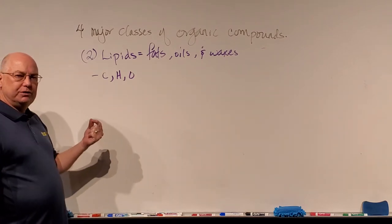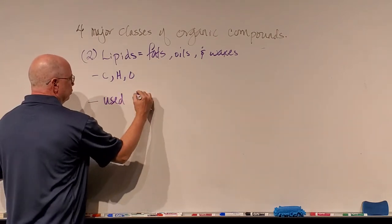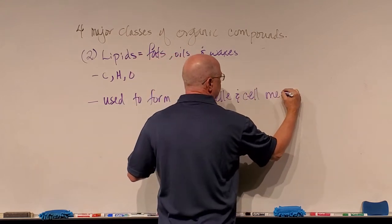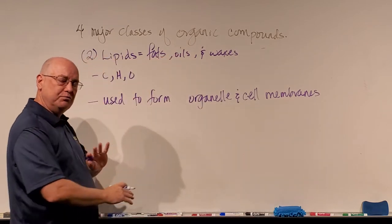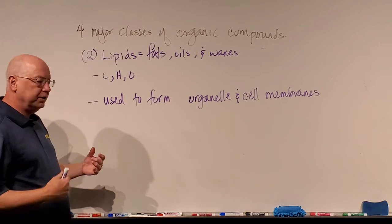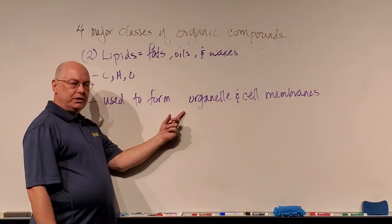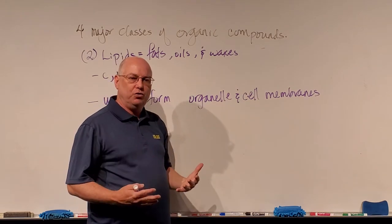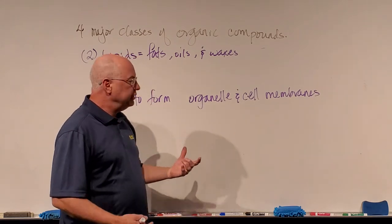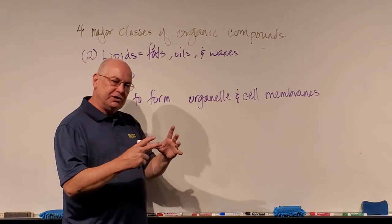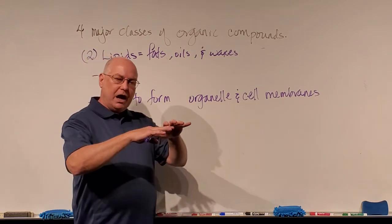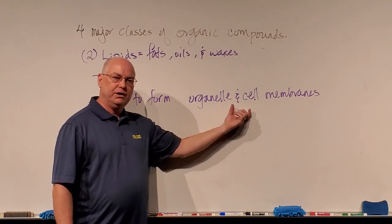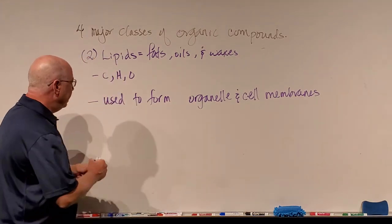Here's the importance of lipids. Their primary function is that they are used to form organelle and cell membranes. When we talk about the organelles inside of cells, within the cell are small structures that scientists first thought were like organs — so they called them organelles, meaning 'little organs.' Many of these organelles have a membrane around them, and that membrane is usually a bilayer of lipids. Anytime we form biological membranes — for organelles or for the outer cell membrane — they're made out of lipids. That's their primary function.